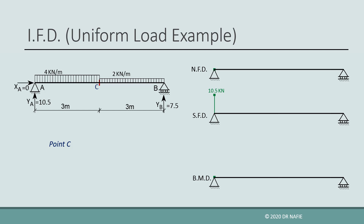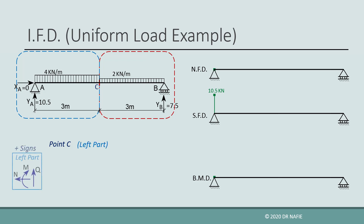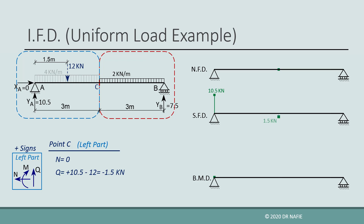We just evaluate them at point C. We follow the same procedure by dividing the beam into two parts at point C, and we will use the left part. To simplify the calculations, we convert the distributed load in the left part to an equivalent concentrated force, which will be 12 kN located at 1.5 m from point A. The normal force will be zero, as before. The shear force will be the sum of all the vertical forces, which is positive YA and negative 12 kN equivalent force, giving a value of negative 1.5 kN for the shear. We draw the value in the shear diagram and connect it to the value at point A using a straight line.